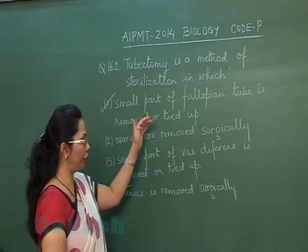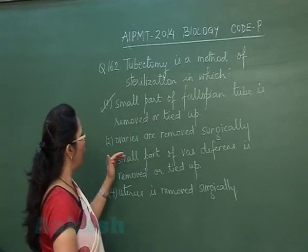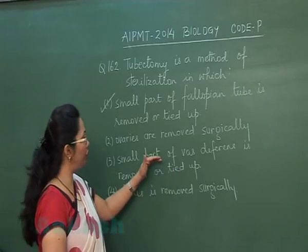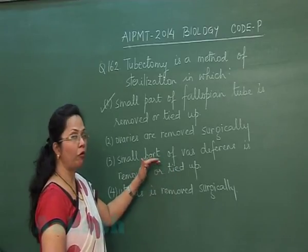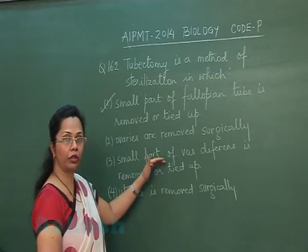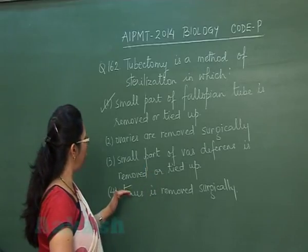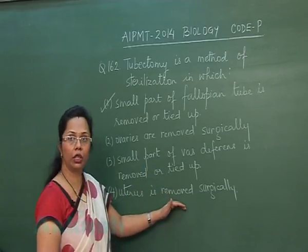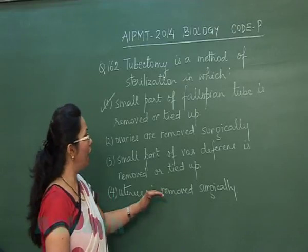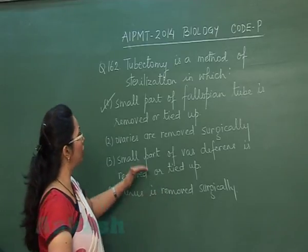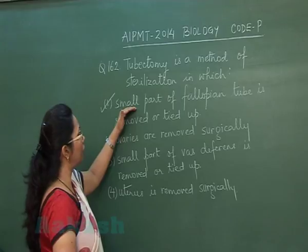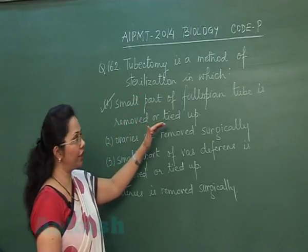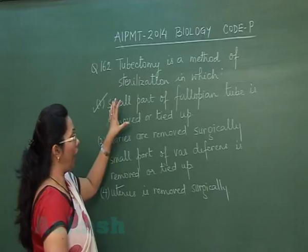The other options: removing ovaries surgically would be called ovaryctomy, not tubectomy. Removing or tying a small part of the vas deferens is vasectomy, which is prescribed to males. Surgically removing the uterus is a hysterectomy — none of these are tubectomy.